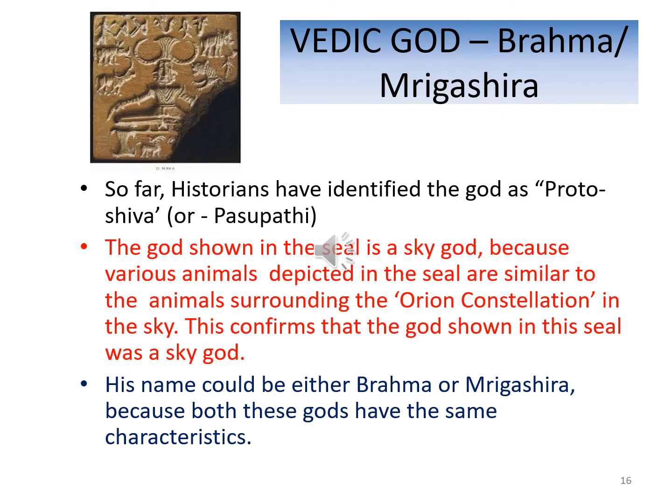Vadi god — Brahma or Mrigashira: so far historians have identified the god as proto-Shiva or Pashupati. The god shown in the seal is a sky god because various animals depicted in the seals are similar to the animals surrounding the Orion constellation in the sky. This confirms that the god shown in the seal is a sky god. His name could be either Brahma or Mrigashira — both these gods share the same characteristics.